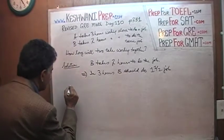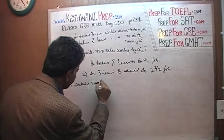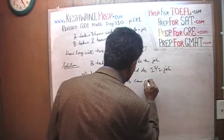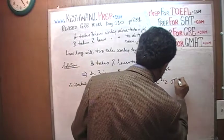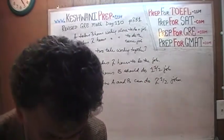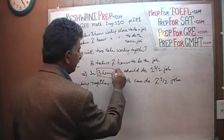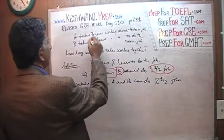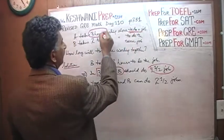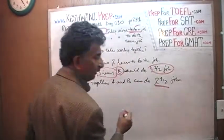We also know that in three hours, A can do an entire job. Which means, working together, A and B can do two and a half jobs. In three hours, A will do one job; in three hours, B will do one and a half. Together they will do two and a half jobs in three hours.